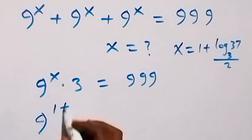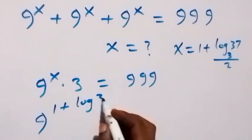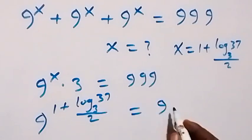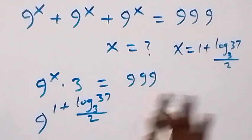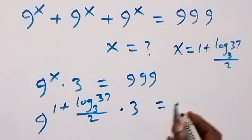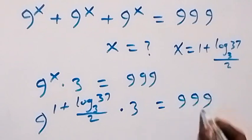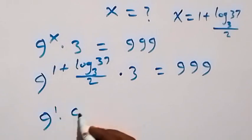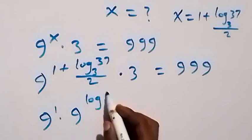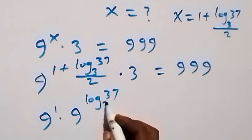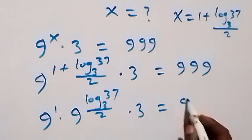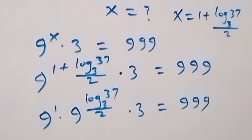With x equal to 1 plus log₃(37) over 2 in the exponent, and summing three such terms times 3, we check whether this equals 9.99. We can separate using the laws of indices: 9 to the power 1, times 9 to the power log₃(37) over 2, then times 3, equals 9.99.